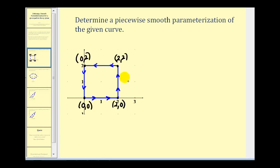Our first example: the curve is a two by two square. Since the square has four sides, we'll have a parameter for each side. We'll label them curve one, curve two, curve three, and curve four.